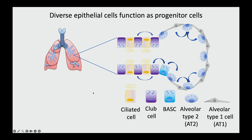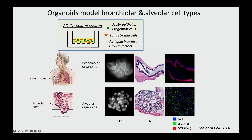This really begs the question of why we have so many different types of epithelial progenitors and how can we study them. In the lab, we've made use of an organoid model system initially developed by a former postdoctoral fellow. We did this by developing methods to prospectively identify epithelial stem cells such as that BASC population with cell surface markers and then combine them with lung stromal cells in an air-liquid interface with Matrigel to make these three-dimensional organoids. Using this population of cells, we can obtain bronchiolar organoids, which give us a window into epithelial cells that line the airways.